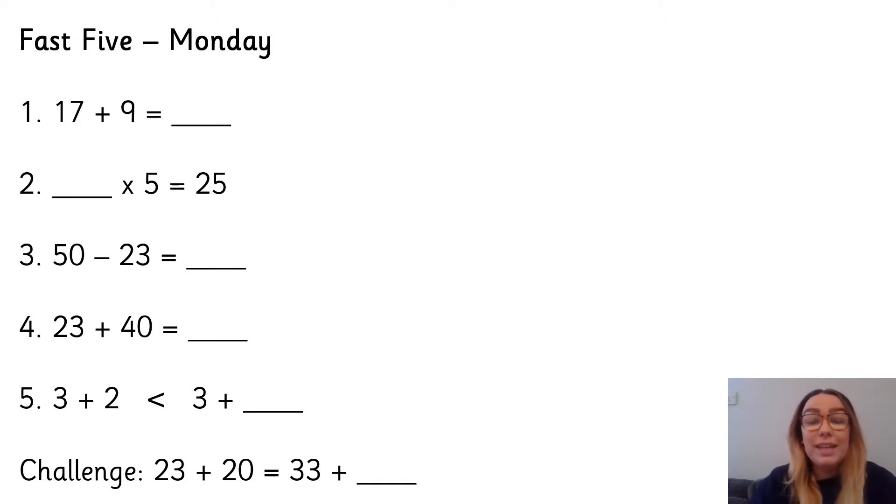So number one, 17 add 9 equals something. Number two, what times 5 is 25? Number three, 50 subtract 23 equals what? Number four, 23 add 40. Number five, 3 add 2 is less than 3 add what? And the challenge, 23 add 20 is the same as 33 add how many?